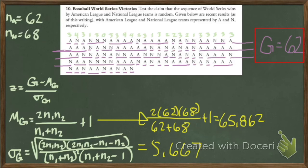And then here we find our Z by taking G minus mu G divided by sigma G. And we get minus 0.68. Now what?